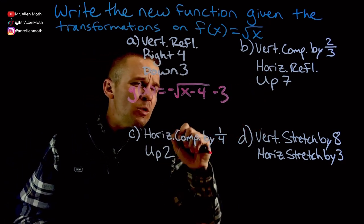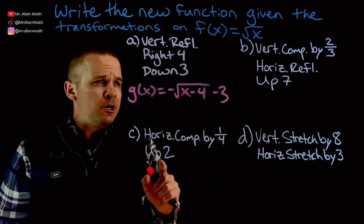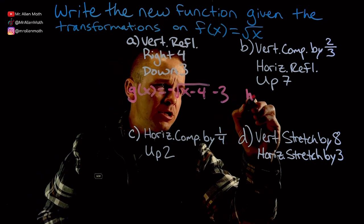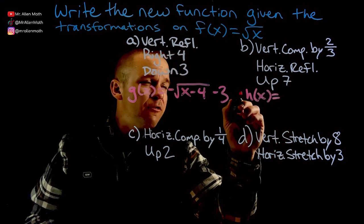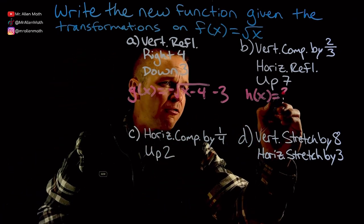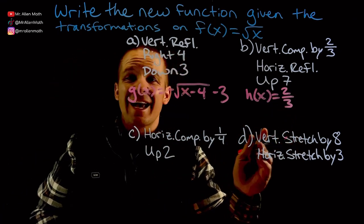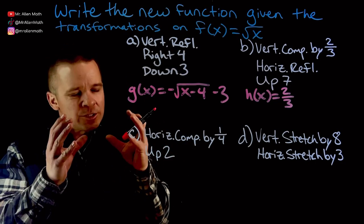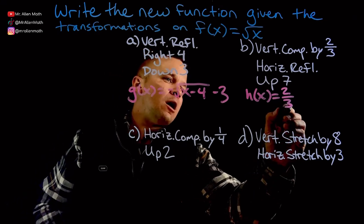Alright, next one, Part B here. We have a vertical compression by 2 thirds, a horizontal reflection, and up 7. Let's call this one h of x. So we have a vertical compression by 2 thirds. That 2 thirds needs to be out front then, right? Outside of the function. When I say outside the function, I mean outside of the square root. Since this is a radical function, that square root, that's what we're talking about with our function.